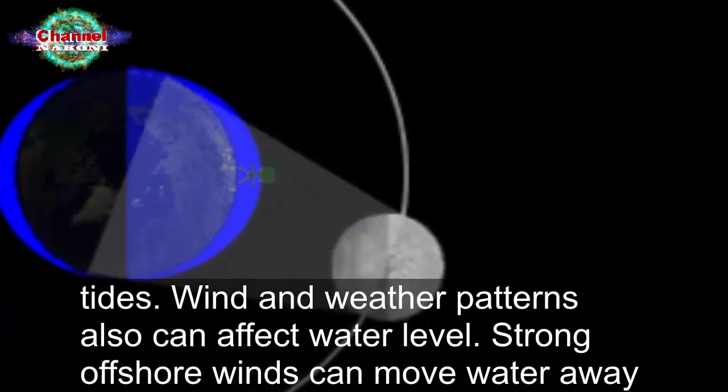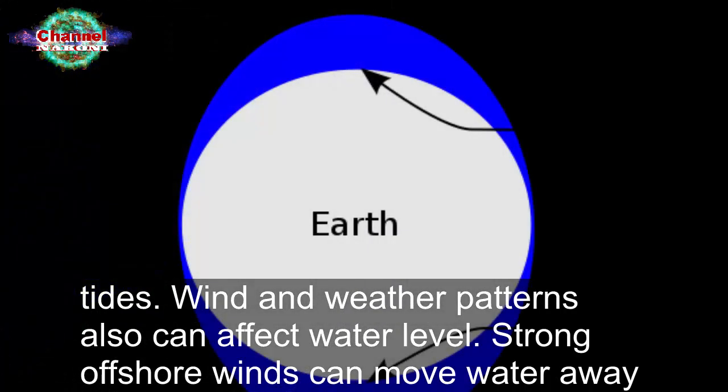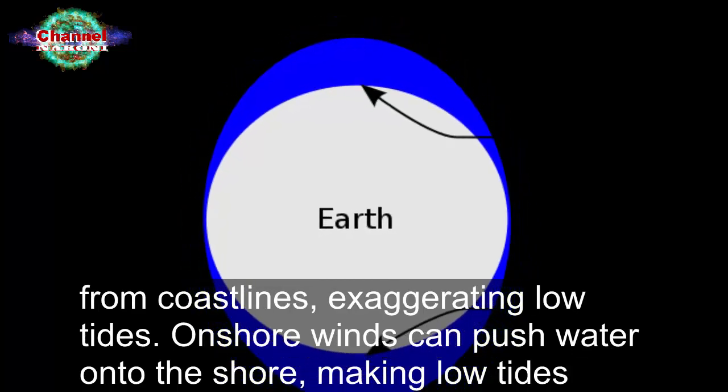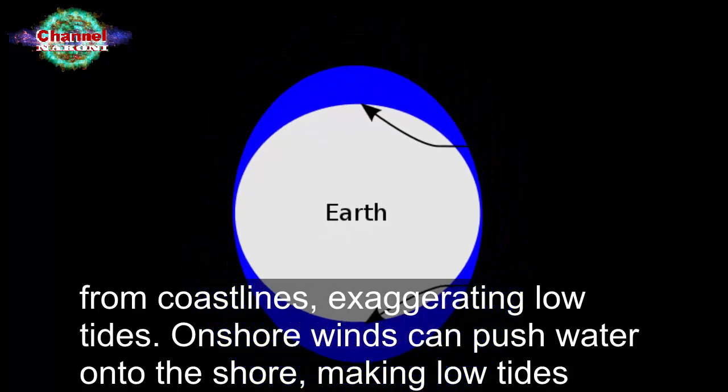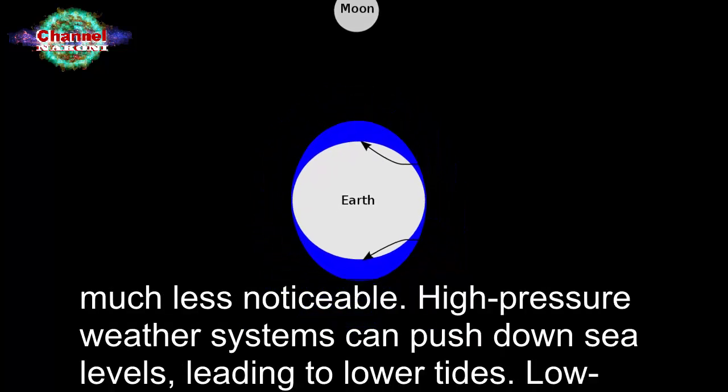Wind and weather patterns also can affect water level. Strong offshore winds can move water away from coastlines, exaggerating low tides. Onshore winds can push water onto the shore, making low tides much less noticeable.